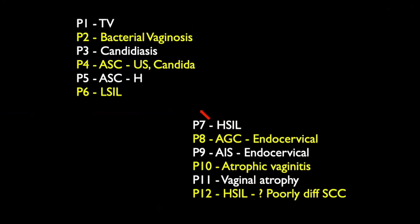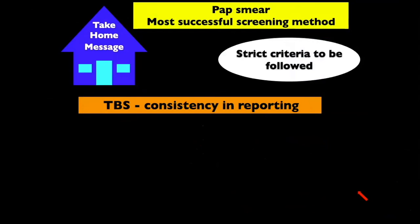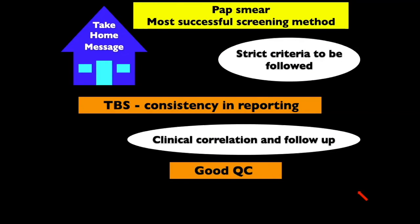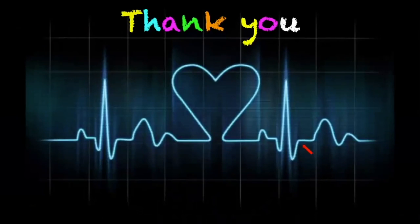To summarize: PAP smear is the most successful screening method. Strict criteria must be followed for each category of diagnosis. The Bethesda System should be followed for consistency in reporting. Clinical correlation and follow-up are very essential, and good quality control is paramount. For references, please visit bethesda.soc.wic.edu for the latest criteria and images. The recommended textbook is Edmunds and Barbara's book on cytology. Thank you very much and have a great day.